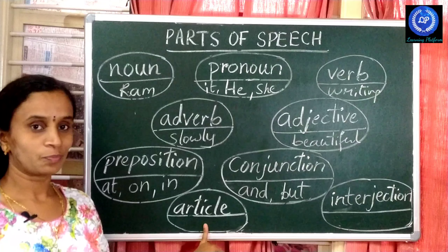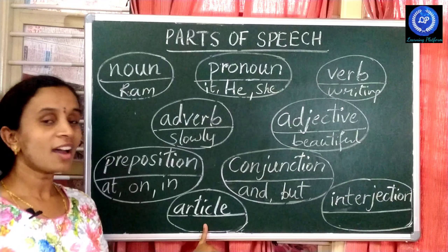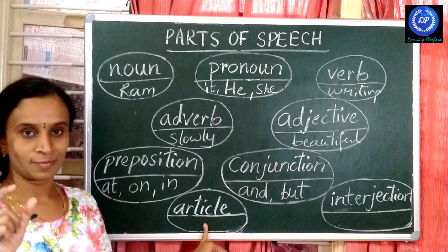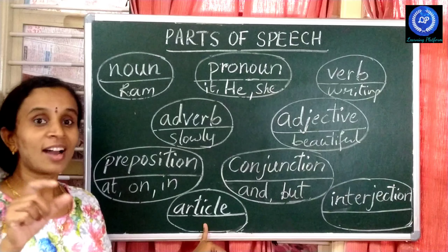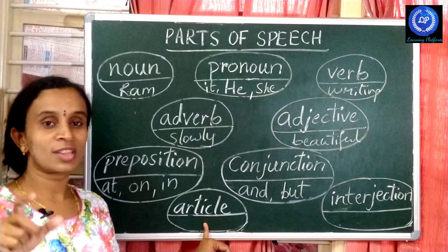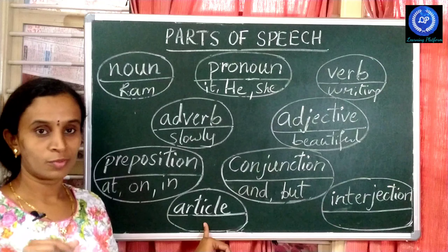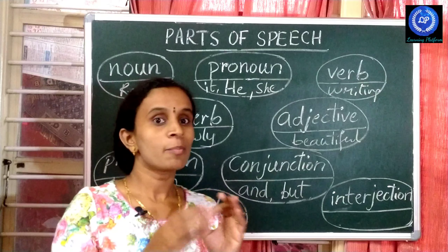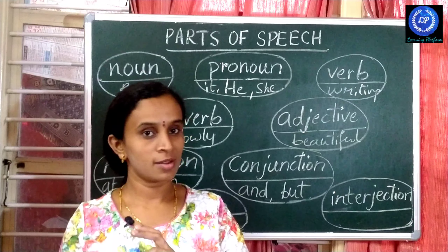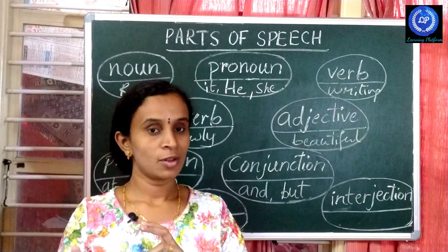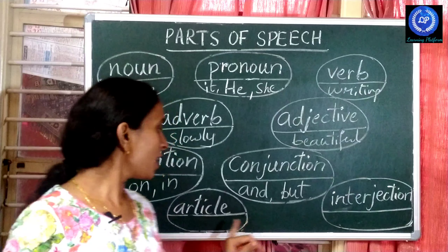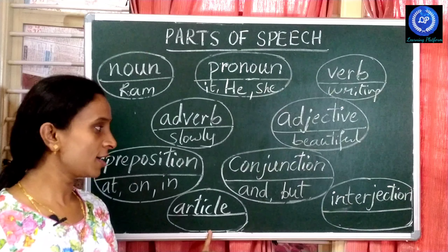Then article. Articles are a and the. Articles are used with nouns. For example: a boy, an apple, the Taj Mahal — like this. These are articles.